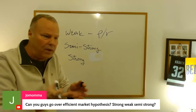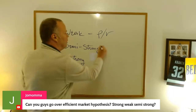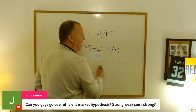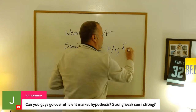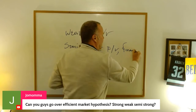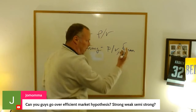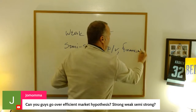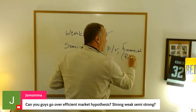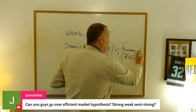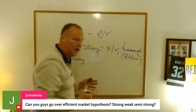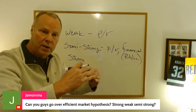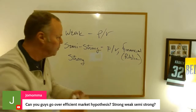On top of that, you then add financials from the corporation — like balance sheets and income statements, financial statements — sometimes referred to simply as public information. So we have a little bit more information now. Now we're semi-strong.